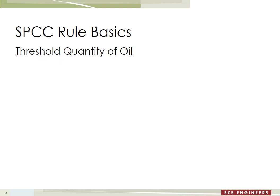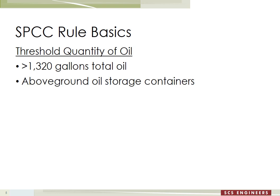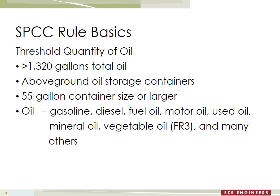The SPCC rule applies to facilities that store more than 1,320 gallons of oil in above-ground oil storage containers, with a few exceptions for underground storage. We're talking about containers that are 55 gallons in size or larger — the rule does not apply to anything smaller than 55 gallons. Oil is a broad definition; the most common types at your facilities include gasoline, diesel, fuel oil, motor oil, used oil, mineral oil, vegetable oil — including FR3, which is marketed as environmentally friendly but still falls under the SPCC rule.